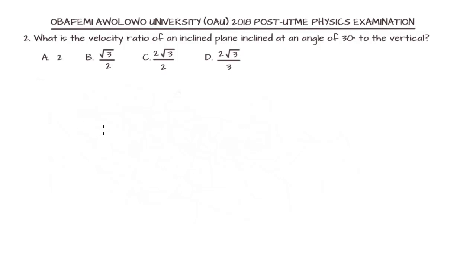The question looks very simple, but if one is not careful, one is going to miss it. Why? In the question, we are told that the inclined plane is inclined at an angle of 30 degrees to the vertical. They were explicit to tell us it is to the vertical.